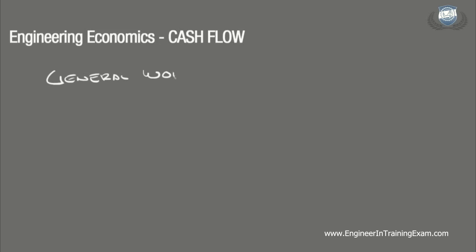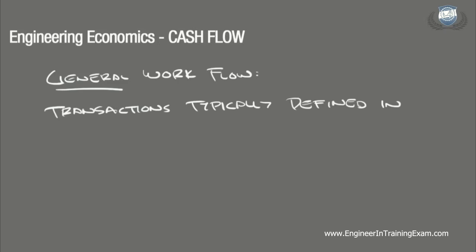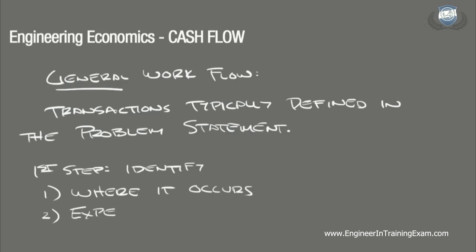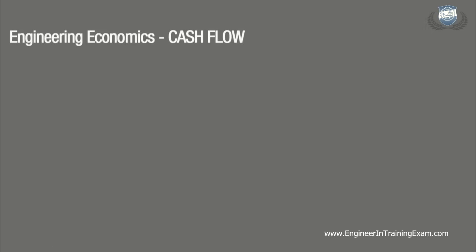So let's discuss the general workflow. When we come across cash flow problems on the exam, these transactions will typically be defined throughout the problem statement. Our first step to solving such problems is to determine the identity of each transaction. For each transaction, we need to define: number one, where it occurs in the lifespan of the project; number two, whether it is an expense or a credit — and remember they could be called disbursements, payments, revenues, etc., but they are all a plus or a minus; and number three, a magnitude.